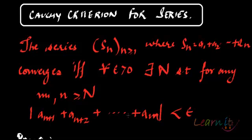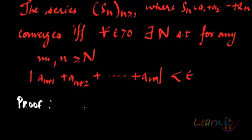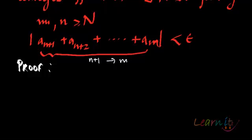and only if for all epsilon greater than 0, there exists a natural number N such that for any m, n ≥ N, we have that the modulus of a_{n+1} + a_{n+2} + ... + a_m, the sum of terms from n+1 to m, is less than epsilon. Then we say that this will be a convergent sequence.